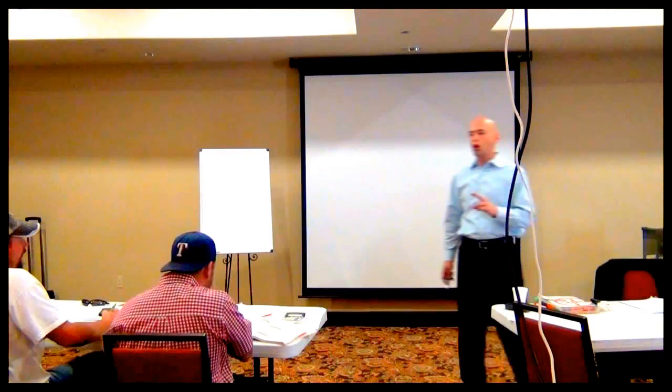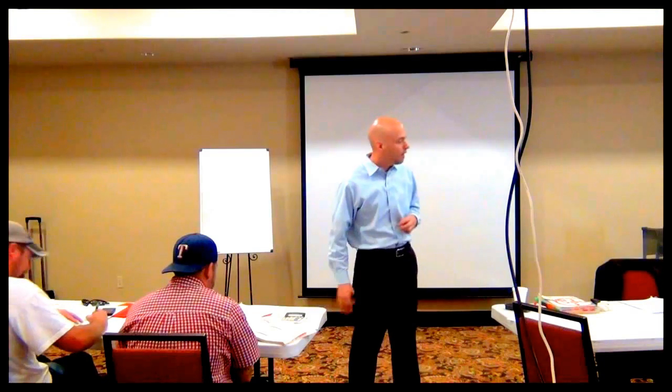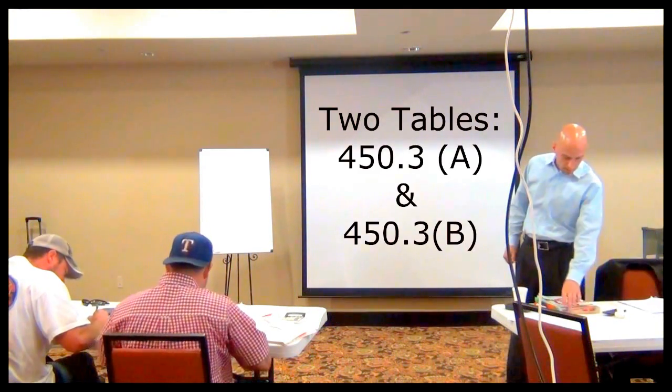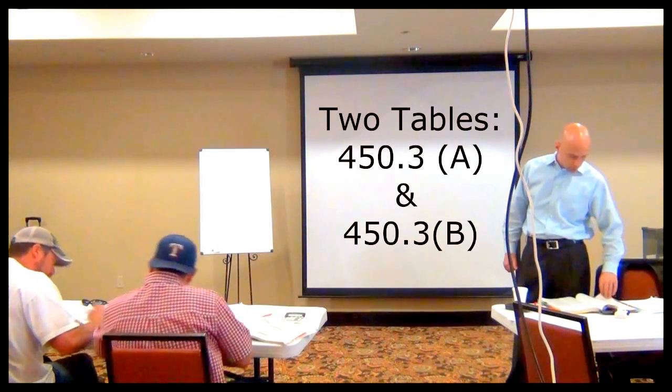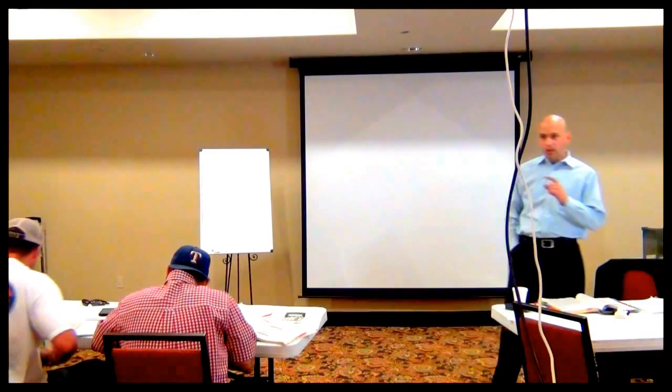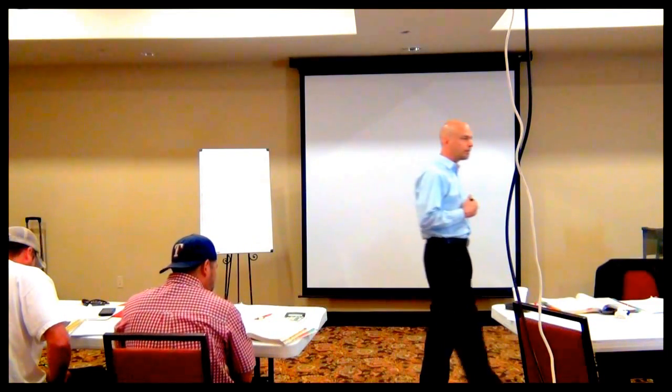The math is a constant. There are two tables we use to size overcurrent protection for a transformer — that's under 450.3 A and B. When dealing with a transformer, the very first table on top, Table A, is for transformers rated over 600 volts. The one below that, the smaller one, is for transformers rated 600 volts or less.